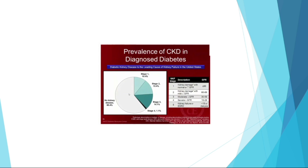This slide shows the prevalence of CKD in diagnosed diabetes. About 60% have no kidney disease; stage 1 is about 10.4%, stage 2 about 13.4%, stage 3 about 14%, and stage 4 just over 1.1% of patients.